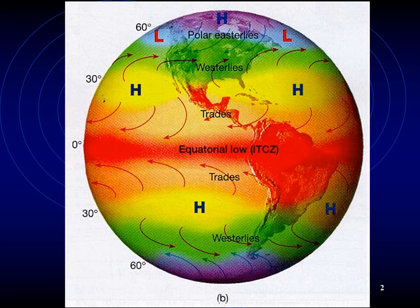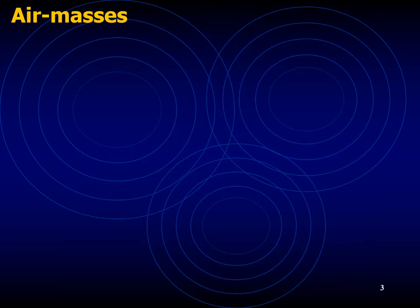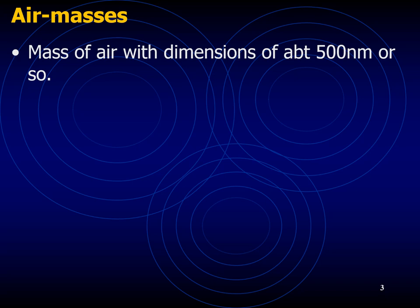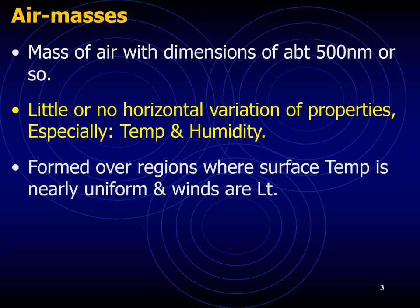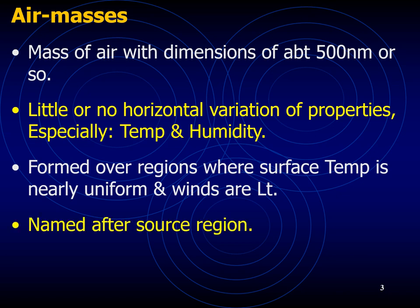Air masses are formed over regions where the Earth's surface temperature is nearly uniform and the winds are comparatively light. They are named by the sources from which they originate. When a geographical position lies within an air mass of a particular type, the weather experienced will be characteristic of that air mass.